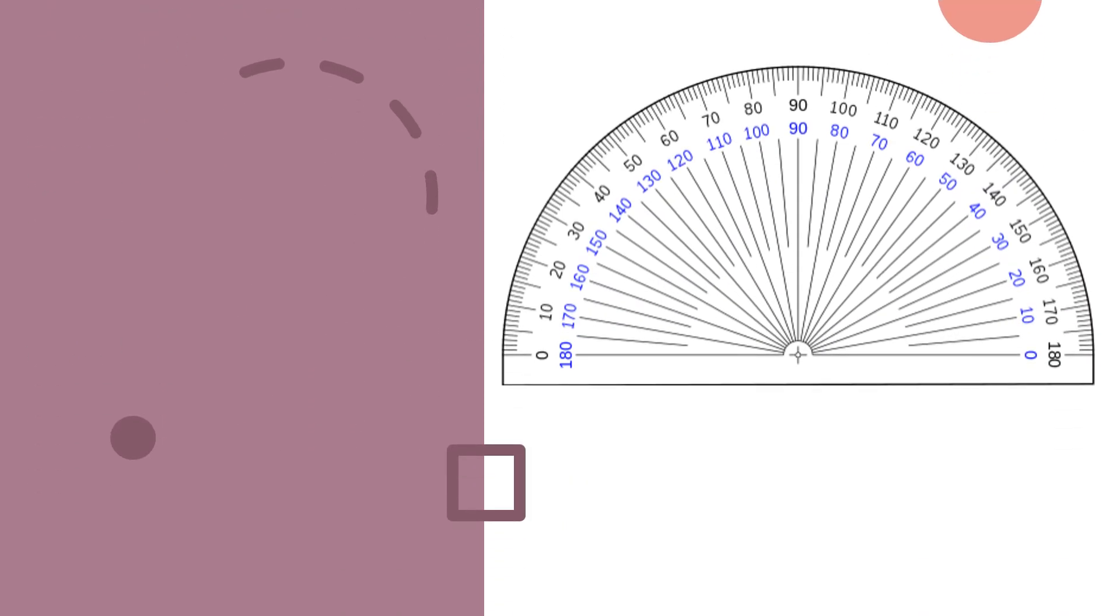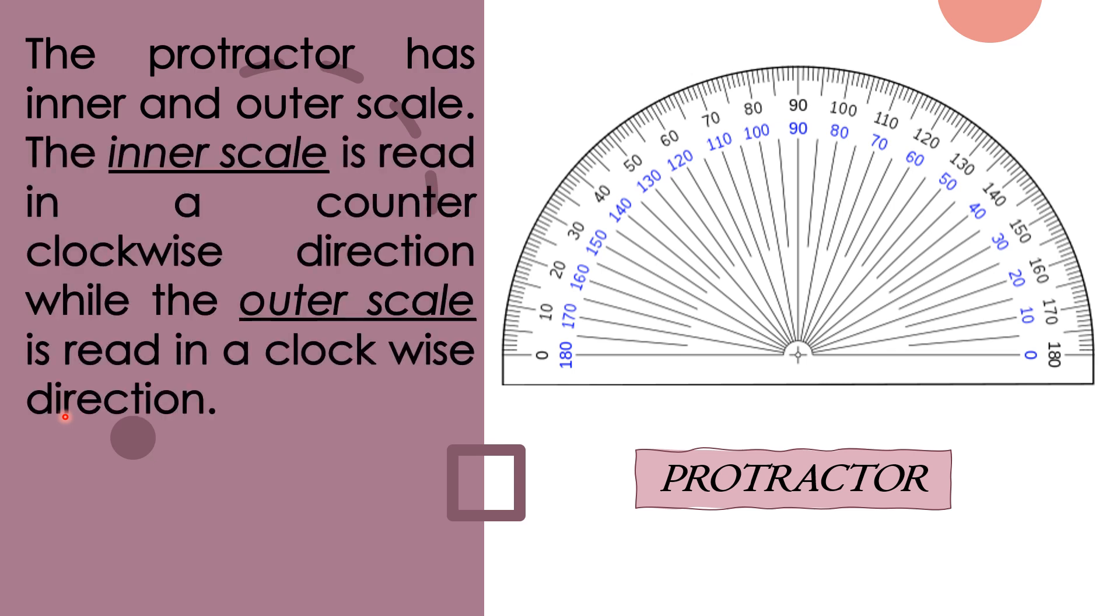So we have here a given protractor. As you can see we have blue numbers and black numbers. The protractor has inner and outer scale. The inner scale is read in a counterclockwise direction while the outer scale is read in a clockwise direction.